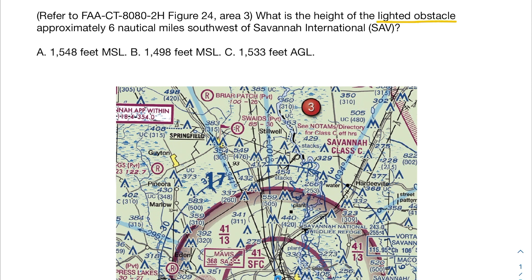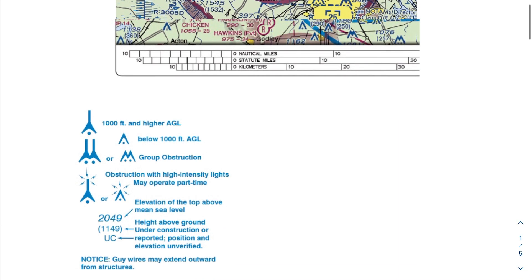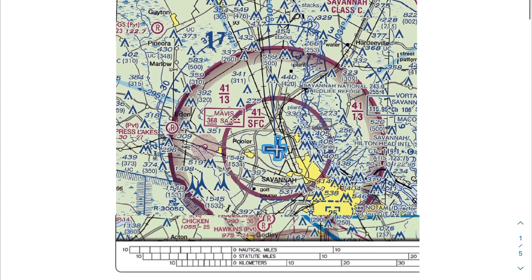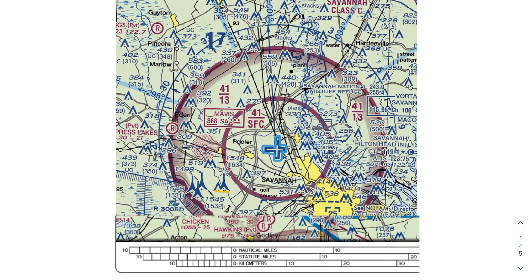Looking within our legend, it shows us different obstructions. The one we want in particular is labeled obstruction with high intensity lights, may operate part time. These are slightly different from other obstructions because they have bolts of light coming from them. If we just ignore the six nautical miles descriptor and look at which obstructions around the Savannah airport have lights, we can narrow it down to probably one of these two.